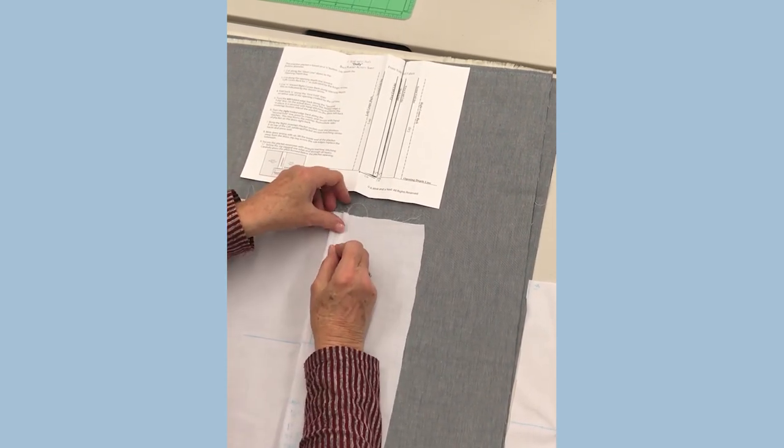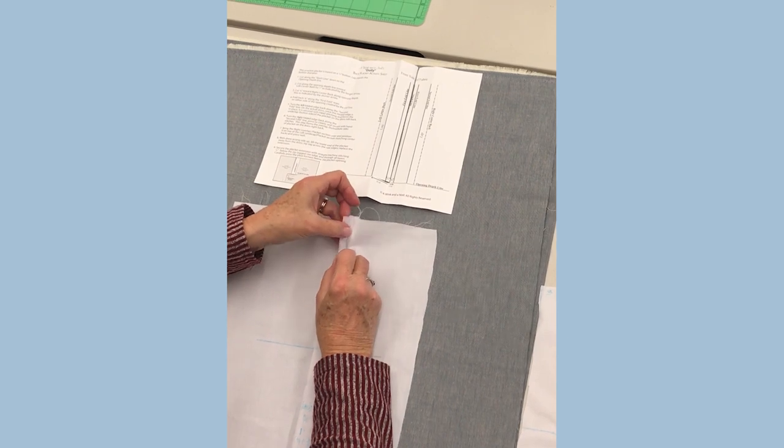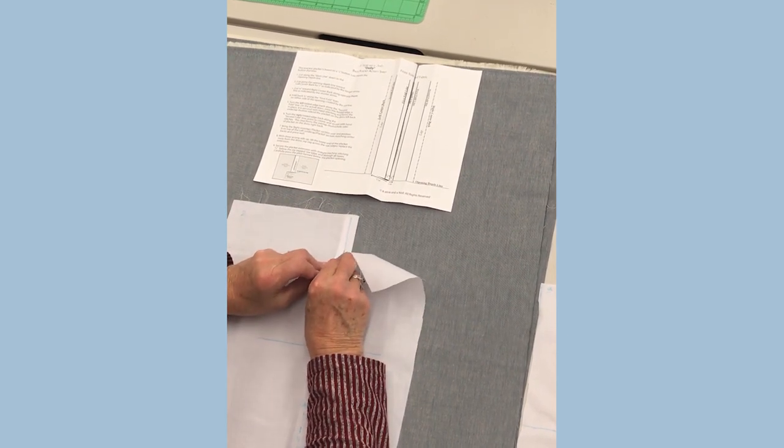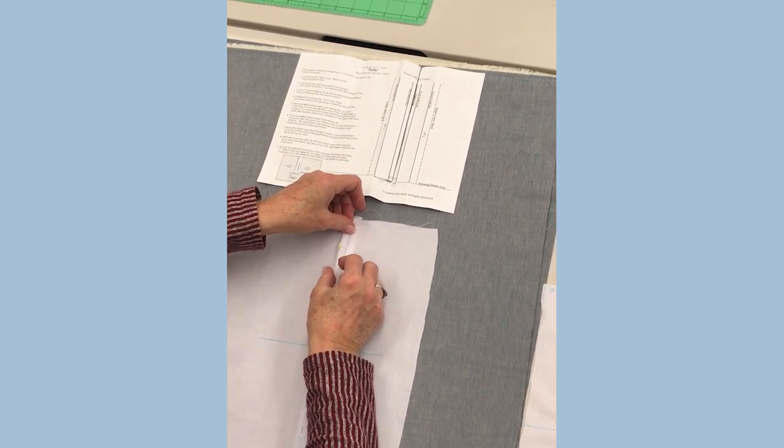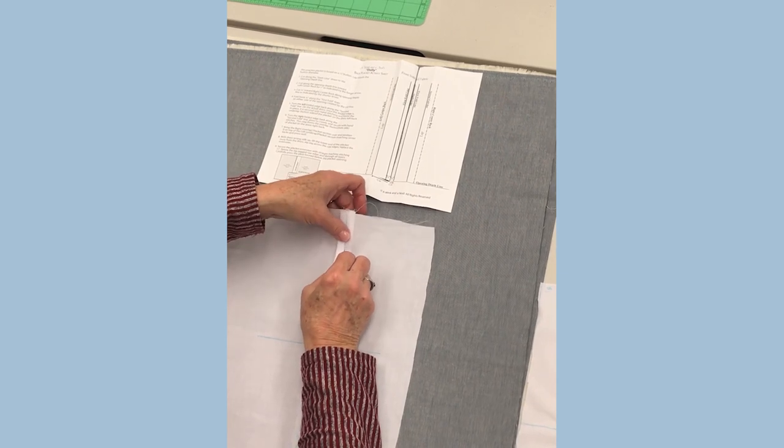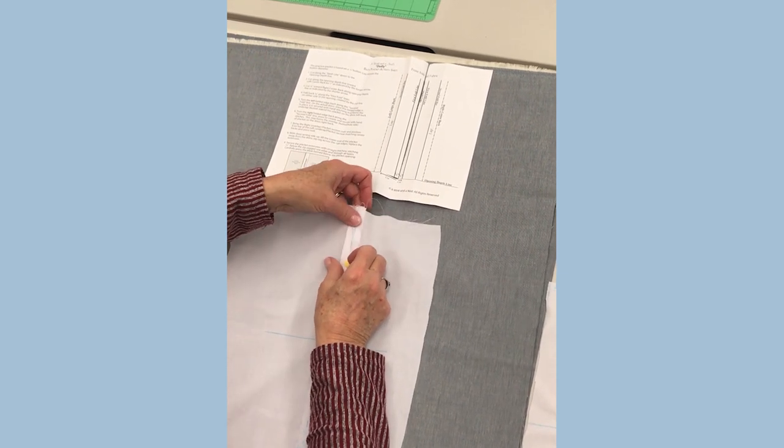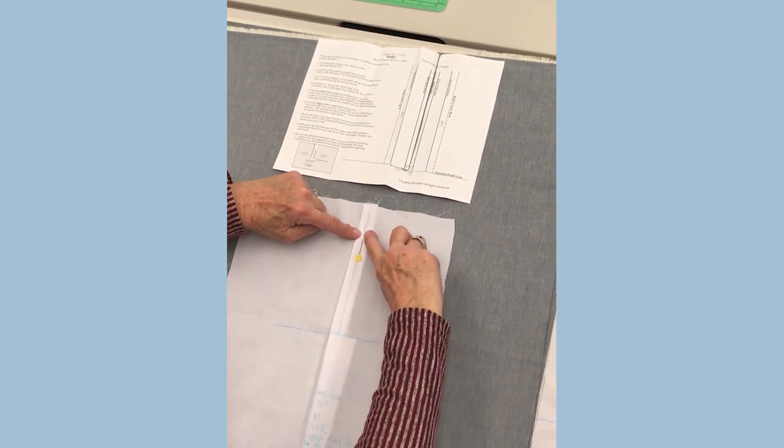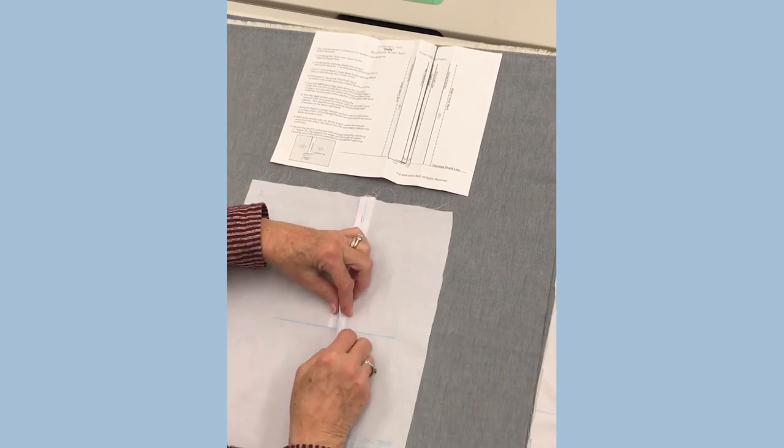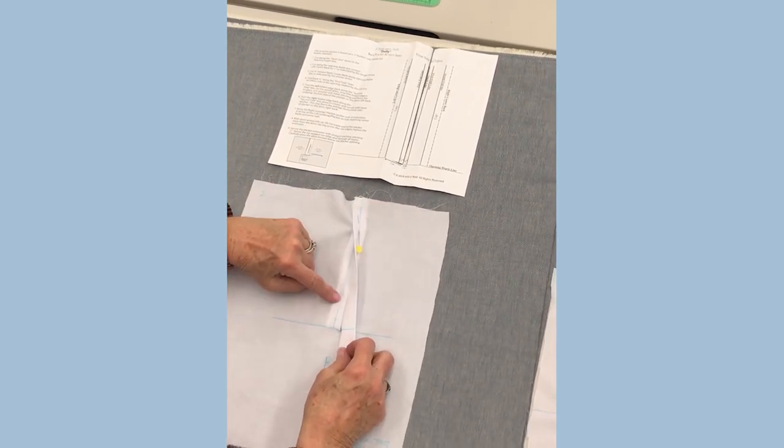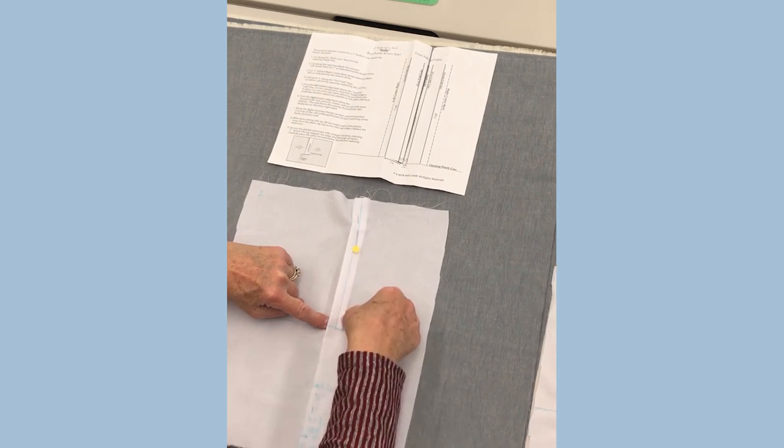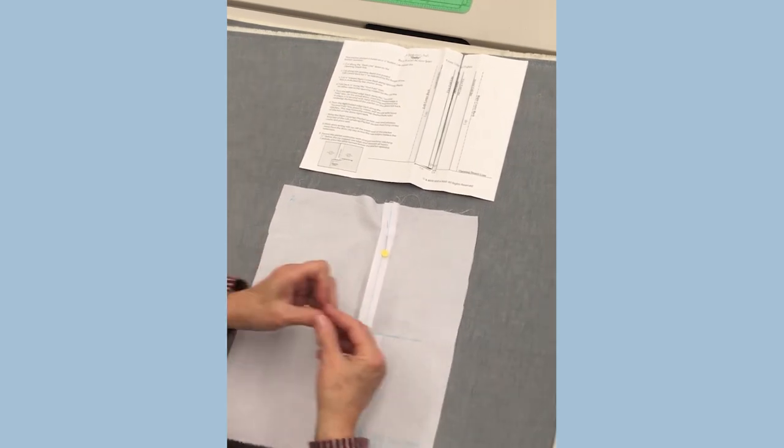There it is on that line, and pin it so my center back lines are lined up. It made a lap, and down here it's the same thing. Here's the center back line and here's the center back line.